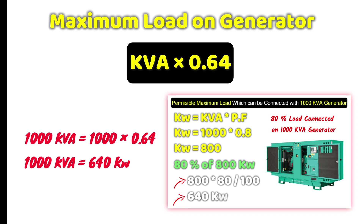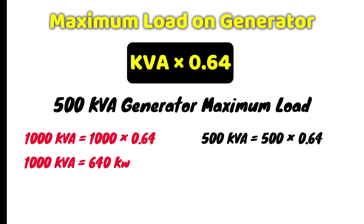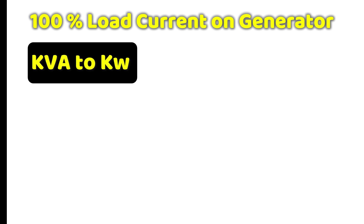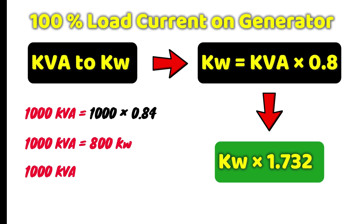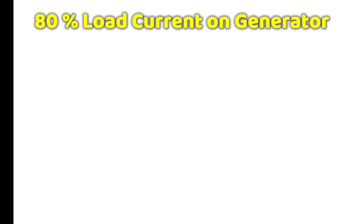For example, if asked the maximum load of a 500 kVA generator, multiply 500 by 0.64. Now for the current rating at 100% load: convert kVA to kilowatt first, then multiply that kilowatt value by 1.732. Multiplying 800 kW by 1.732 gives 1385 ampere — that is the current flow when full load is connected to the 1000 kVA generator.